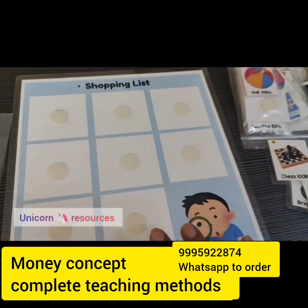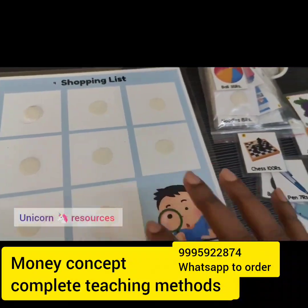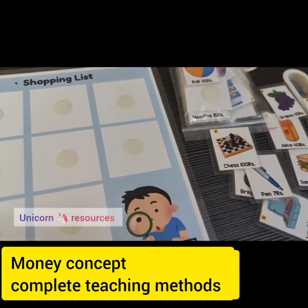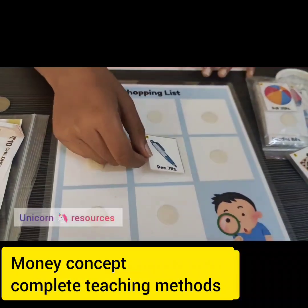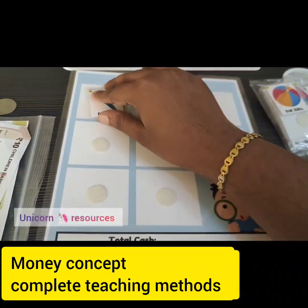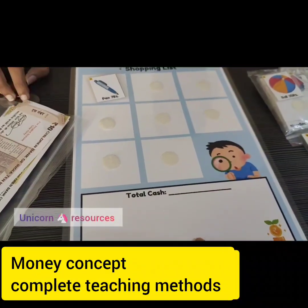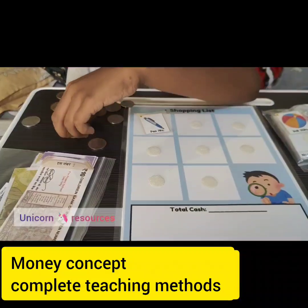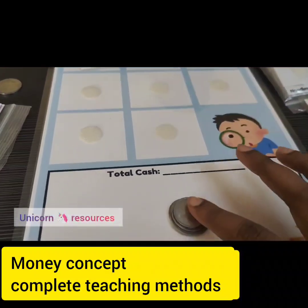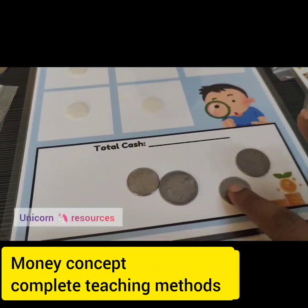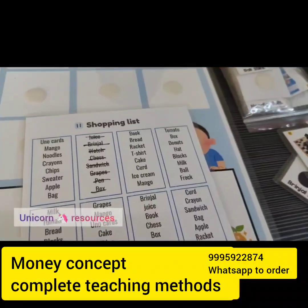This is the shopping game with a shopping list — very interesting. You can start with one item. For example: go to the shop and buy one pen for seven rupees. The child collects the amount: one plus one is two, plus two is four, plus one is five, plus two is seven — seven rupees. The child pays and takes the pen.